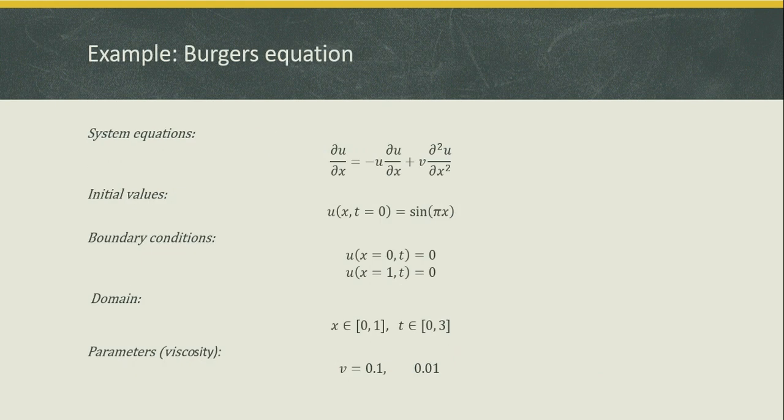In this presentation, we will be solving the Burgers equation. It's a second order equation as shown here. There is one parameter for the equation, the viscosity, and we are going to start from the initial condition u equals sine of pi times x, with boundary conditions u equals zero at both ends of the spatial domain which goes from 0 to 1, in the time interval 0 to 3.